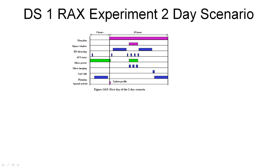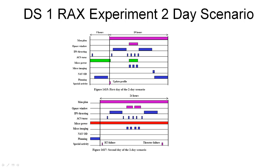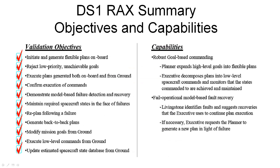RACS controlled the spacecraft autonomously for two days. On the first day, typical operations took place: the ion propulsion system was turned on and off at various times, the attitude control system was operated when appropriate, some images were taken, and some onboard planning was performed. The second day included the injection of simulated failures of the radiometric tracking and thruster systems to show how the planner could cope with these events. The final report concluded that the validation objectives had been achieved — the system was able to deal with both ground-based and onboard autonomously generated plans, execute those plans in the face of failures, and replan where required, through capabilities including robust goal-based commanding and integration with the onboard model-based fault recovery system.